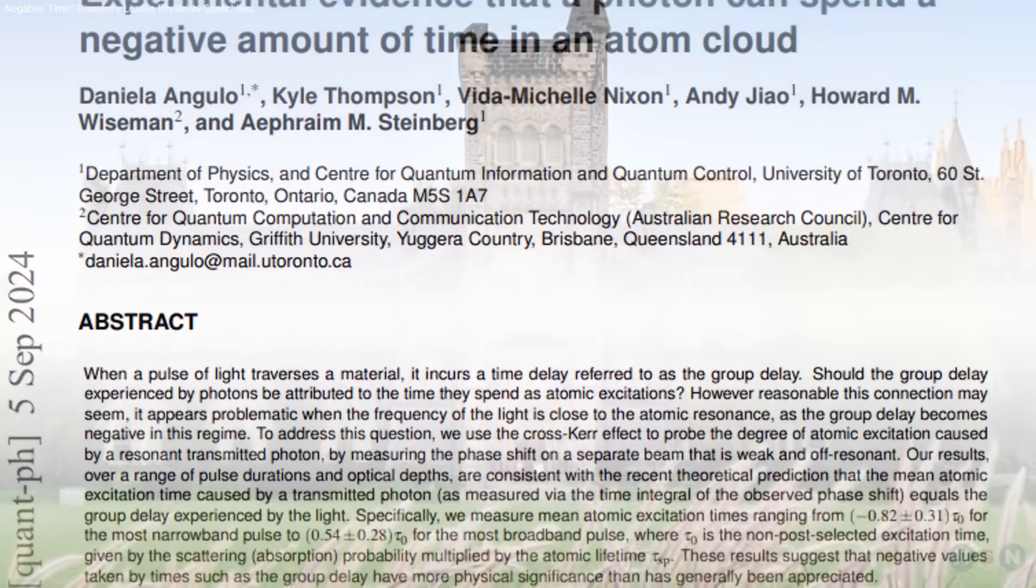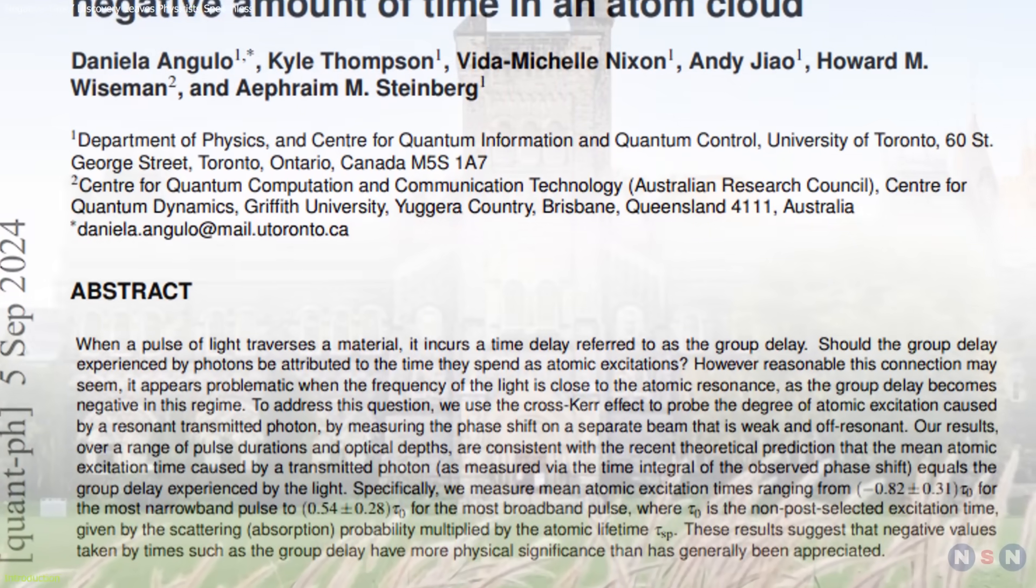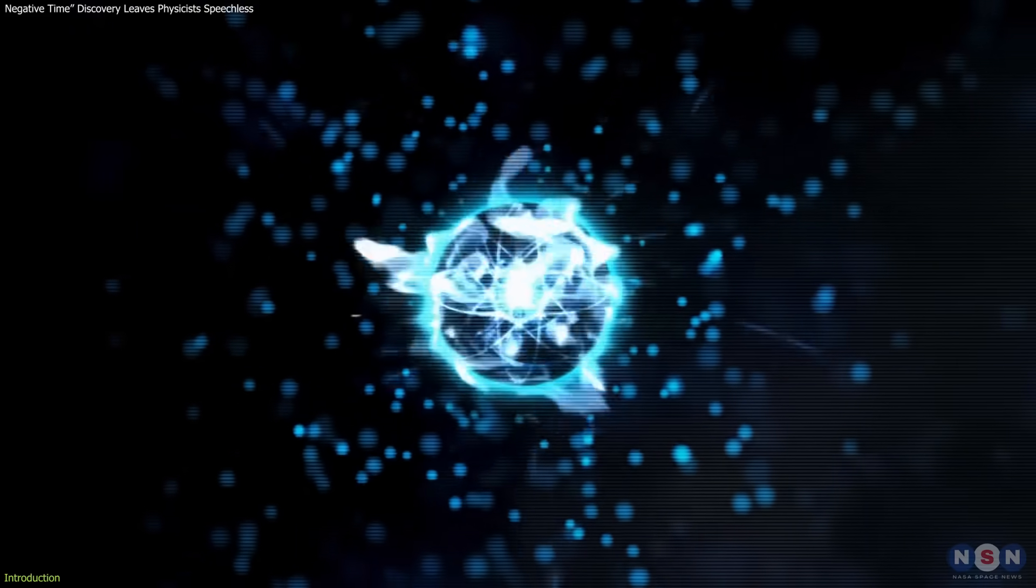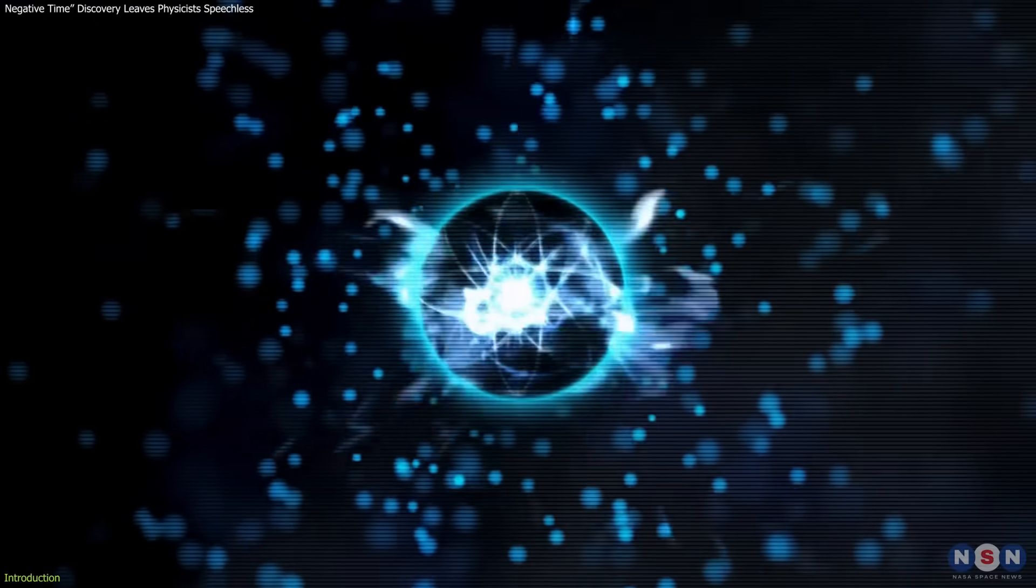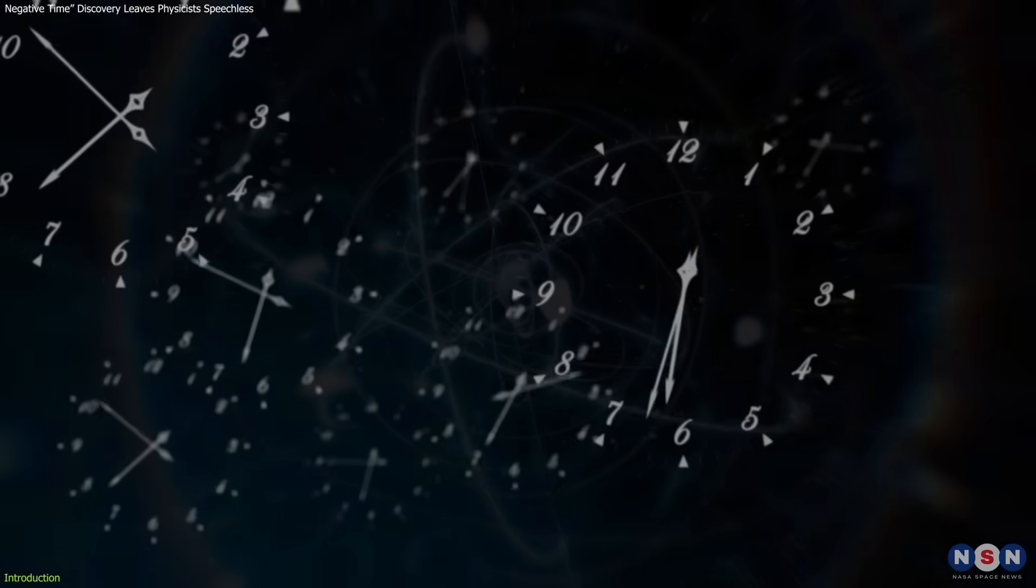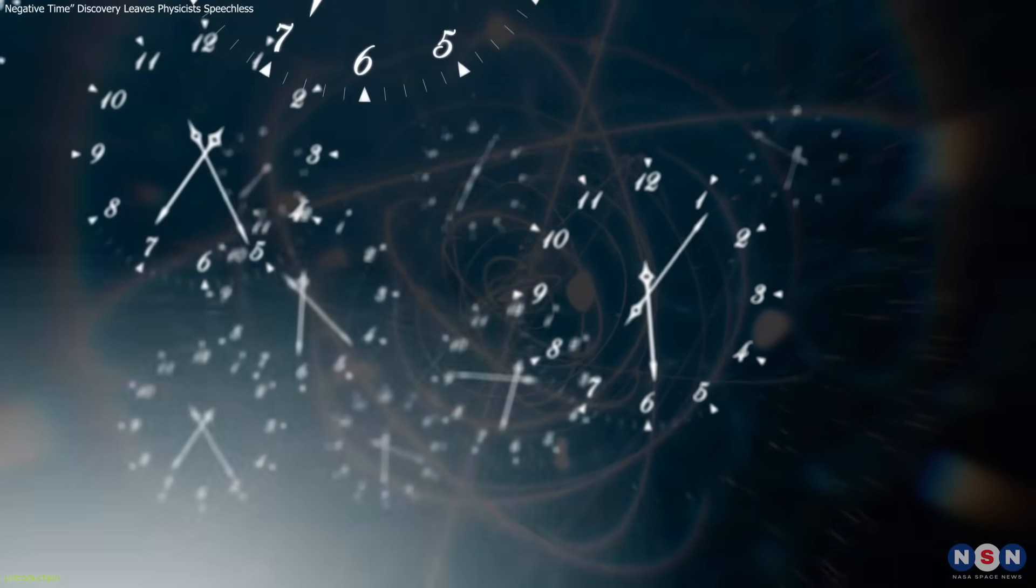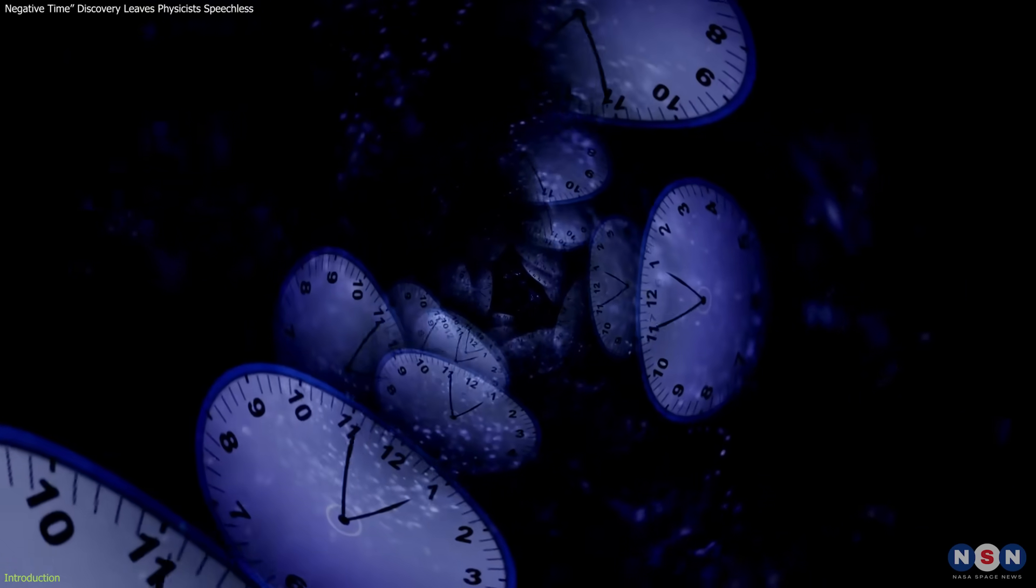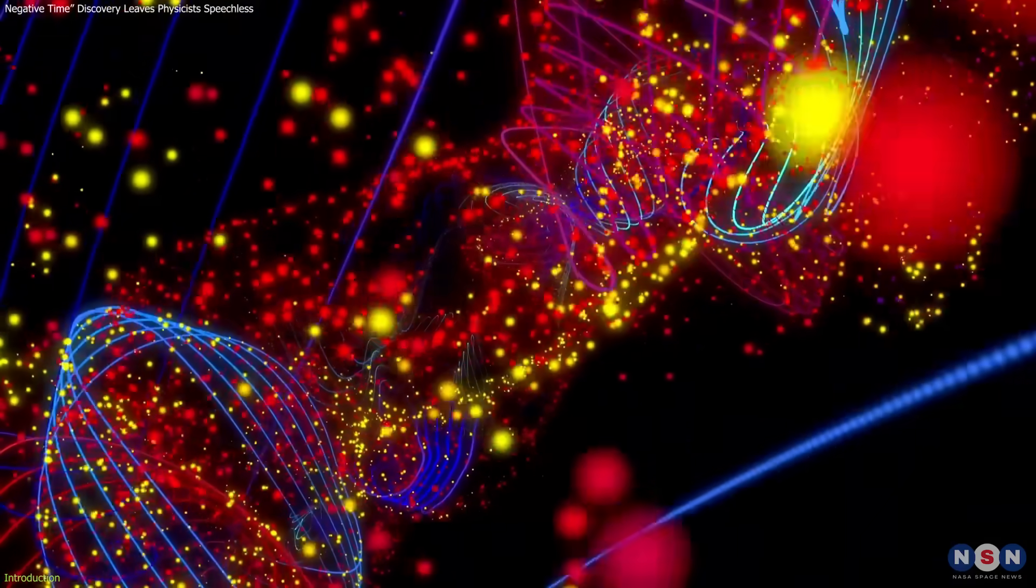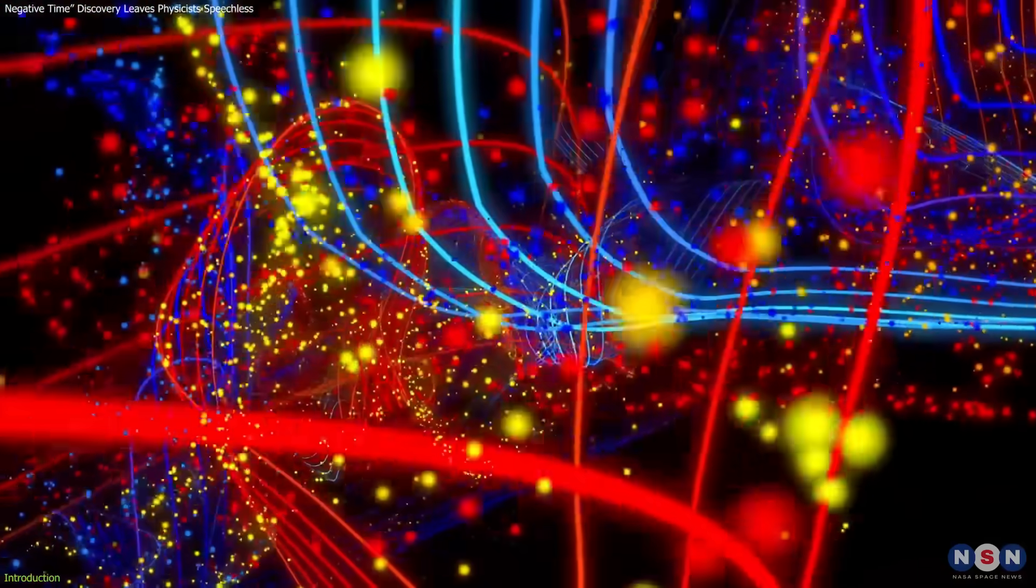Physicists at the University of Toronto observed a strange quantum effect. Under certain conditions, atoms seem to react before absorbing light, suggesting a negative interaction time. While it doesn't imply time travel, it challenges our understanding of cause and effect in quantum mechanics.